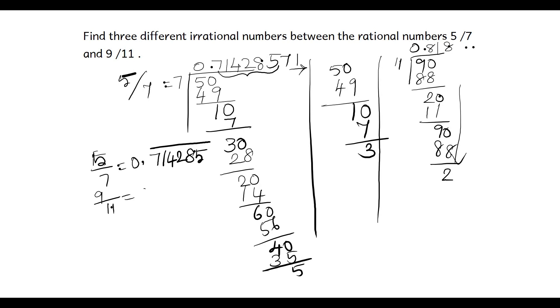So now 5 by 7 and 9 by 11 both are non-terminating and recurring numbers, so you can choose three different irrational numbers between them. The condition for irrational number is the patterns after the decimal point should not get repeated. There should not be any pattern, it should be a random number. So I have chosen three numbers like this. You can choose any irrational numbers in such a way that the numbers after the decimal point should be random numbers, not in any pattern form.